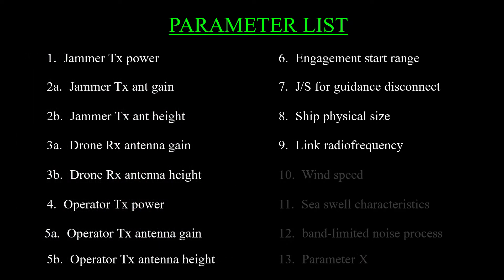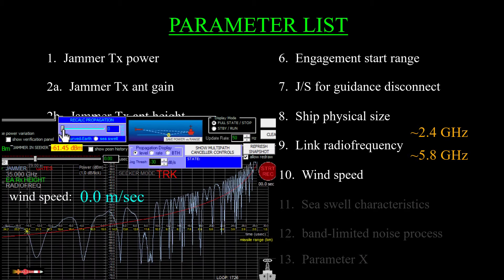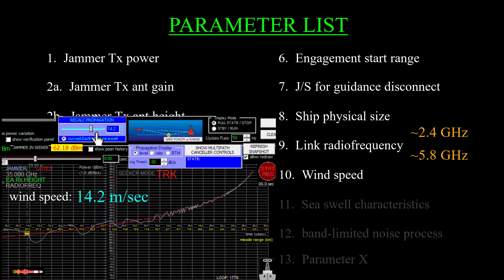Nine, the radio link frequency. So for a commercial off-the-shelf video link, that'd be, let's say, 2.4 gigahertz or 5.8 gigahertz, give or take. It might be using either or both. Ten is wind speed, which determines the sea surface roughness. And that determines how deep the propagation nulls are.